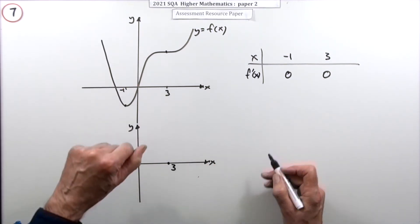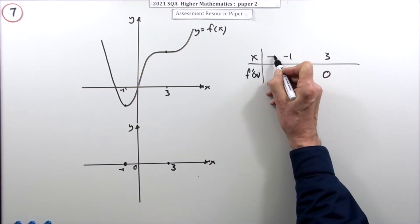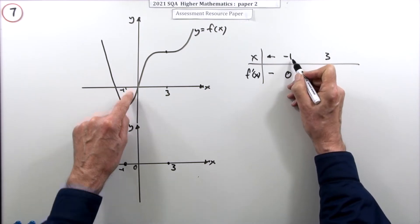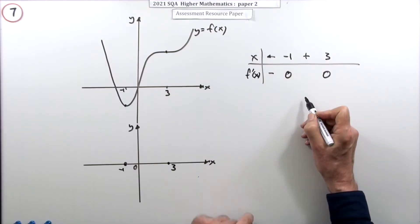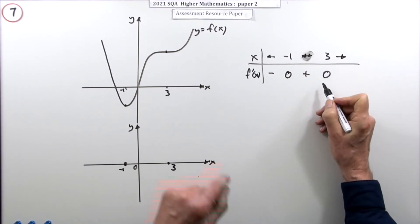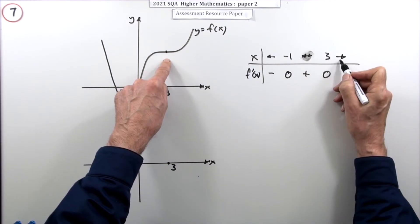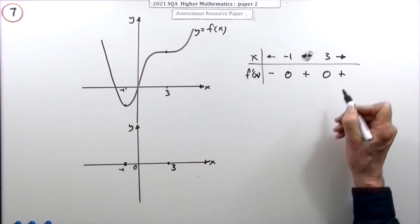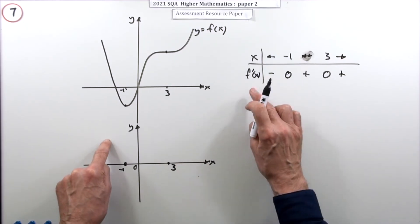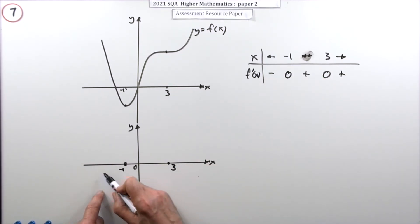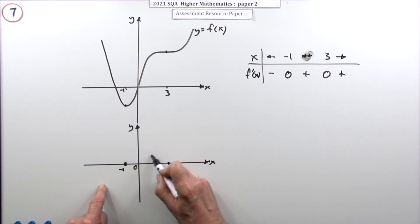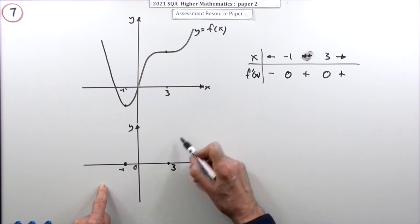Well, just look at which way it's sloping. Before negative one, it was always negative. After negative one, it's positive. After three, it's still positive. So that just means wherever I draw this graph, the values before negative one have to be negative values. The values between them have to be positive values, and the value after again has to be positive.